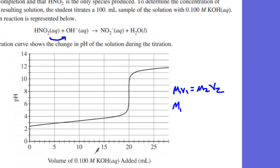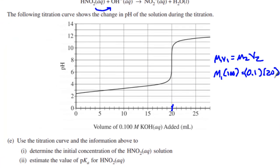We want to know the initial concentration, M1. They told us we have a 100 mL sample. We know the KOH is 0.1 molar, and the volume we used to get to the titration point was 20 mL. So we take 0.1 times 20 divided by 100, and we get a molarity of the HNO2 of 0.020 molar HNO2. That is worth one point.